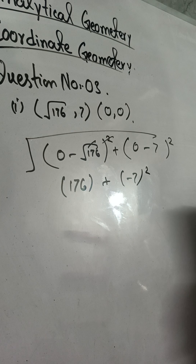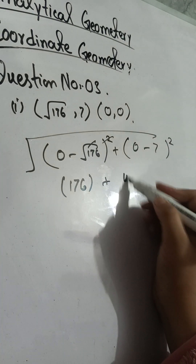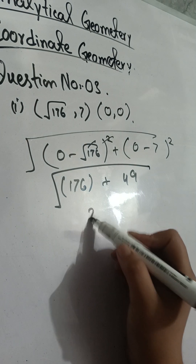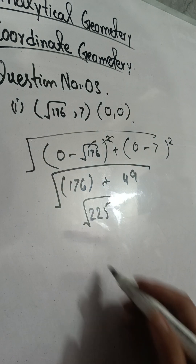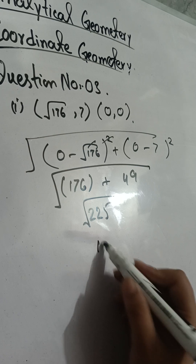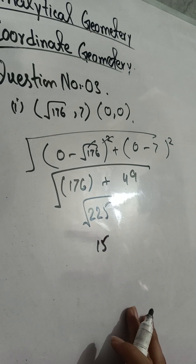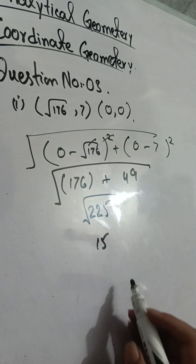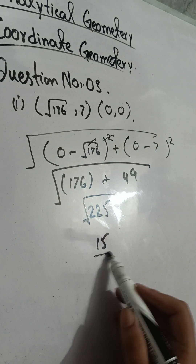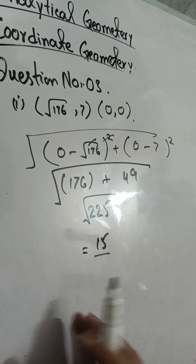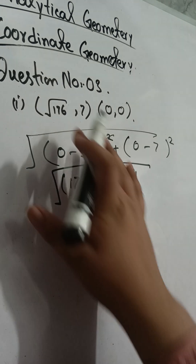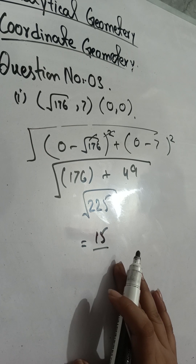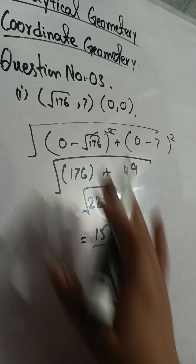Zero minus 7 is negative 7, and negative 7 squared equals 49. So we directly write 49. Now add 176 and 49 to get 225, and the square root of 225 equals 15. In question three, we have to prove these points are at a distance of 15. The answer came out to 15, so we write: yes, these points are at a distance of 15.